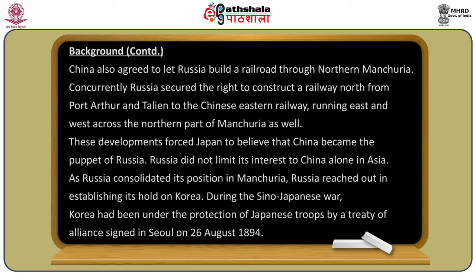China also agreed to let Russia build a railroad through northern Manchuria. Russia secured the right to construct a railway north from Port Arthur to the Chinese Eastern Railway running east-west across the northern part of Manchuria. These developments forced Japan to believe that China had become a puppet of Russia.